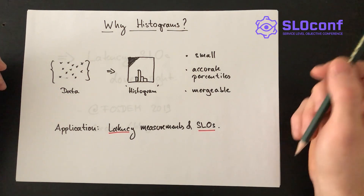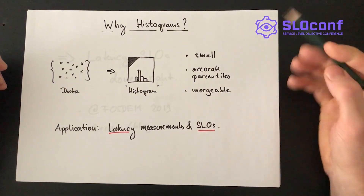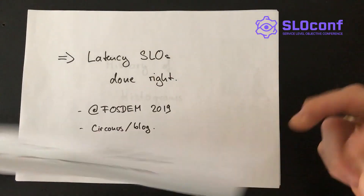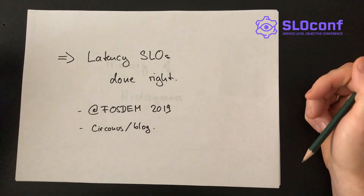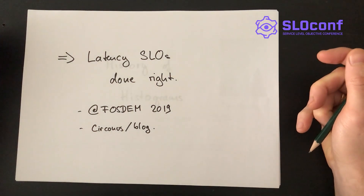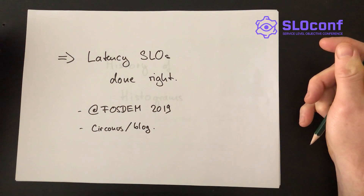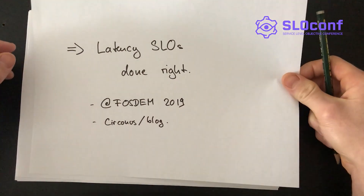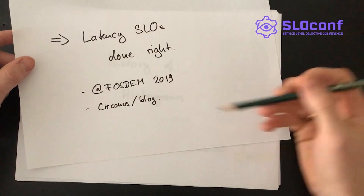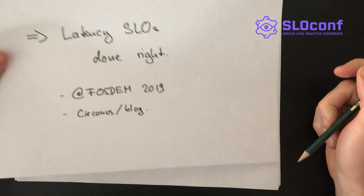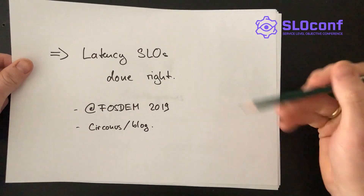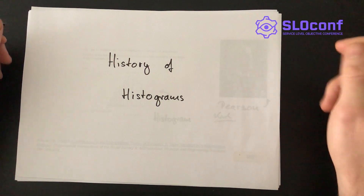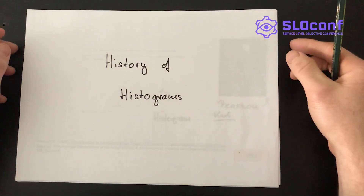Why is this important for an SLO conference? Latency SLOs are a critical application here. I would argue that latency SLOs are best done with histograms, or maybe even really only possible if you have histogram data structures at hand. I've talked about this topic at a different conference, for example at FOSDEM 2019, and there's also a blog post on the Syconus blog called "Latency SLOs Done Right." If you're not familiar with this, look it up.